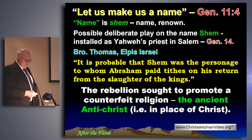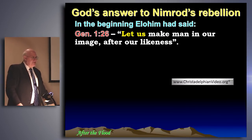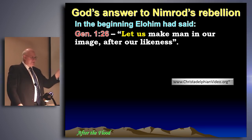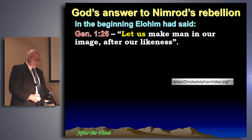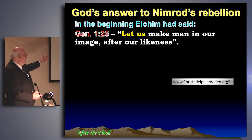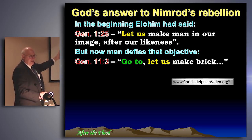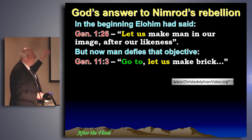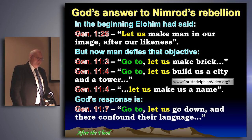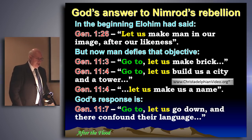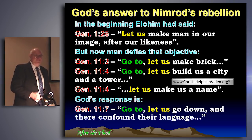What's God's answer to Nimrod's rebellion? In the very beginning, the Elohim said in Genesis 1:26 on the sixth day of creation: 'Let us make man in our image and after our likeness' — they were made with the mental and moral capacity of the Almighty himself. But now man defies that objective. Genesis 11:3, 'Go to, let us make brick'; verse 4, 'let us build a city and a tower, let us make us a name — a Shem.' But God's response in verse 7 is: 'Go to, let us go down and confound their language' — the intervention of God to overthrow the rebellion of man.